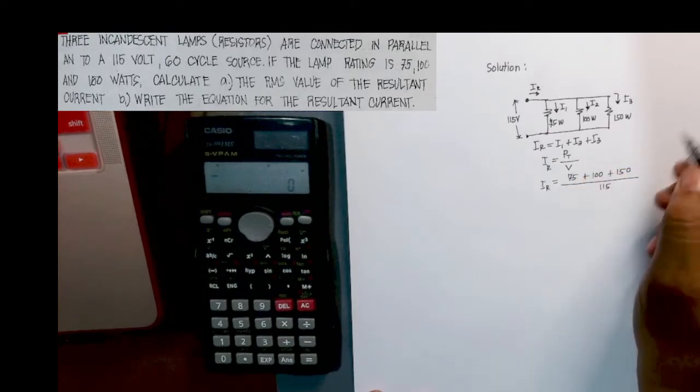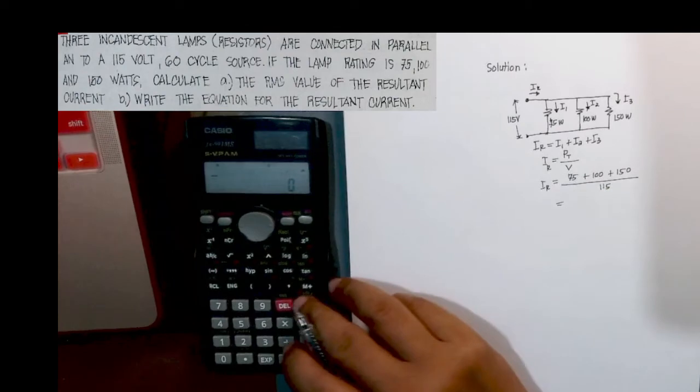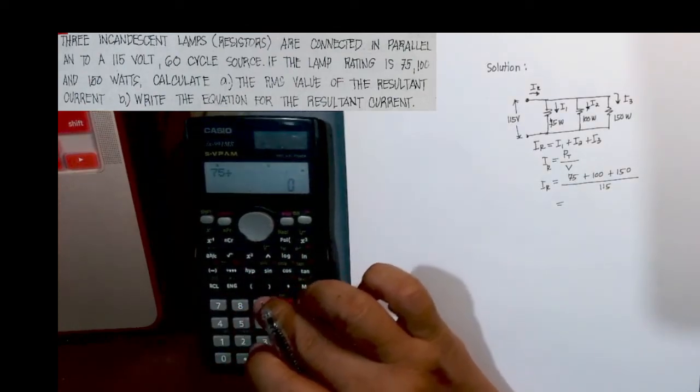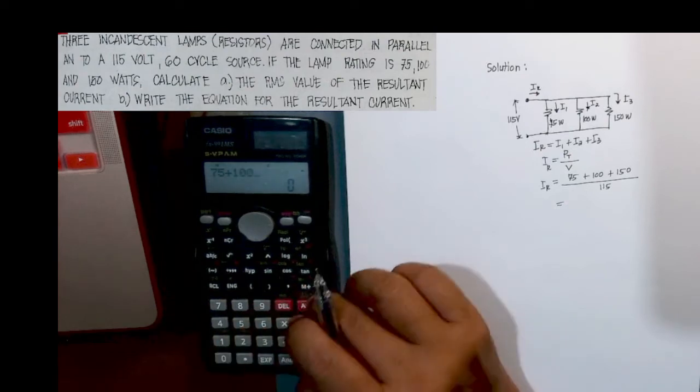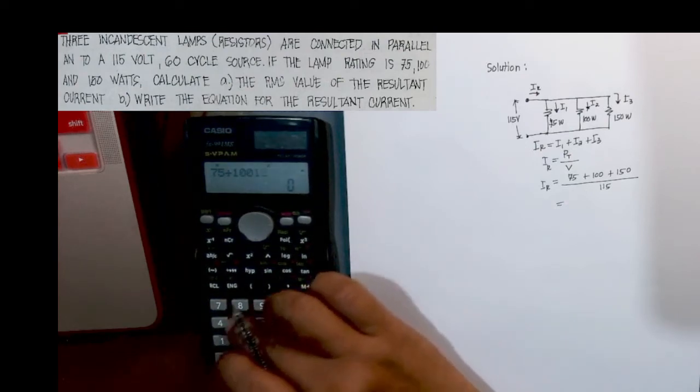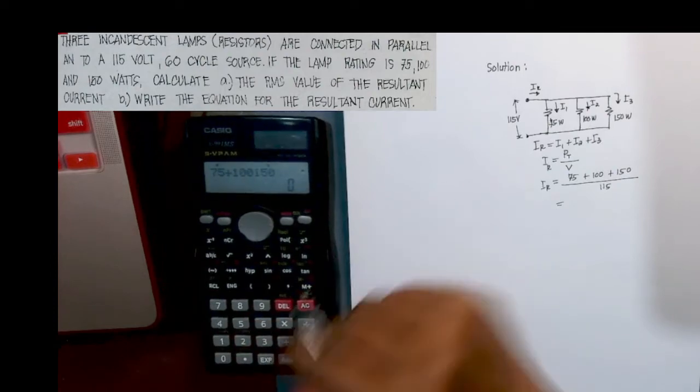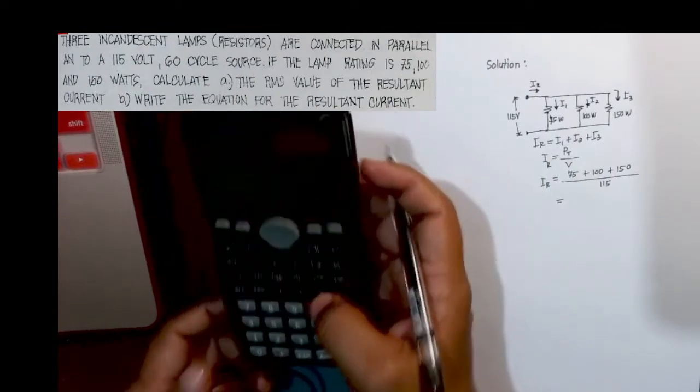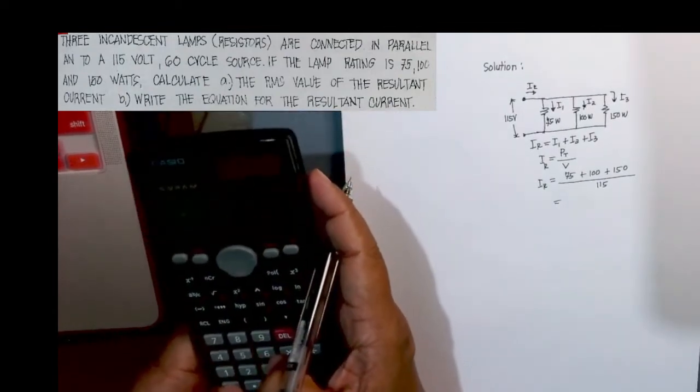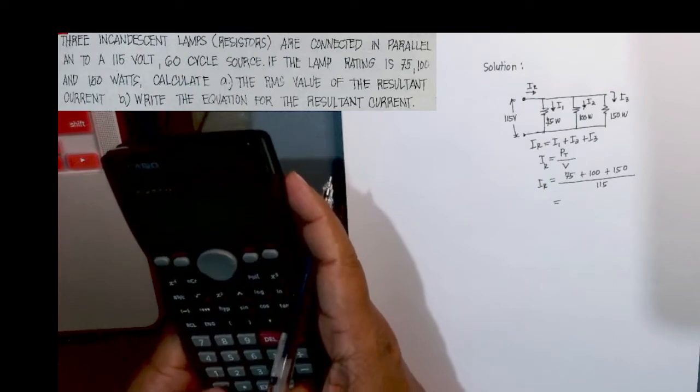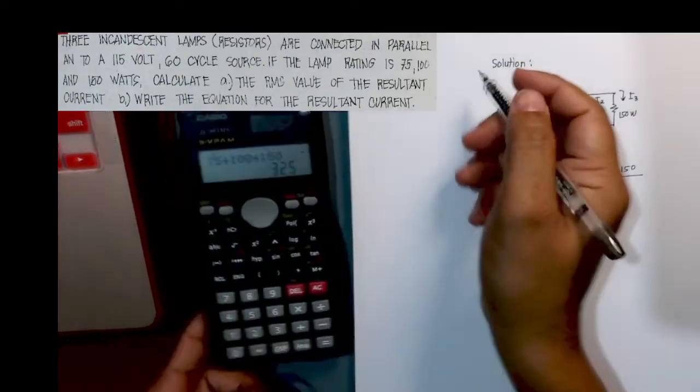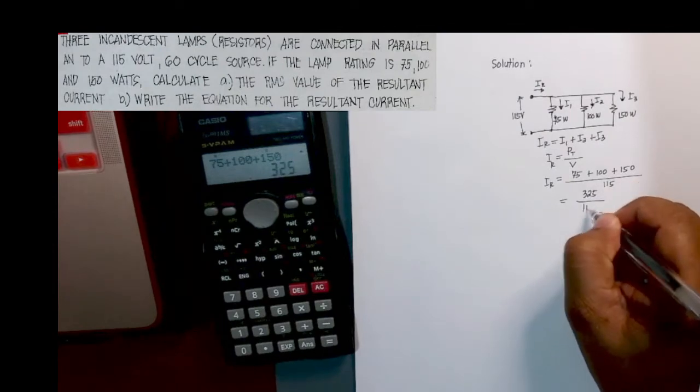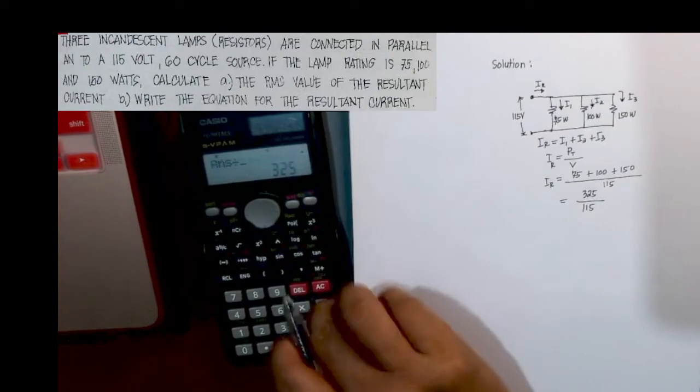So if you are going to add the lamps wattage, 75 plus 100 plus 150, it will give us... So that is 75 plus 100 plus 150 which simply equals 325 watts divided by 115. So you divide this by 115.